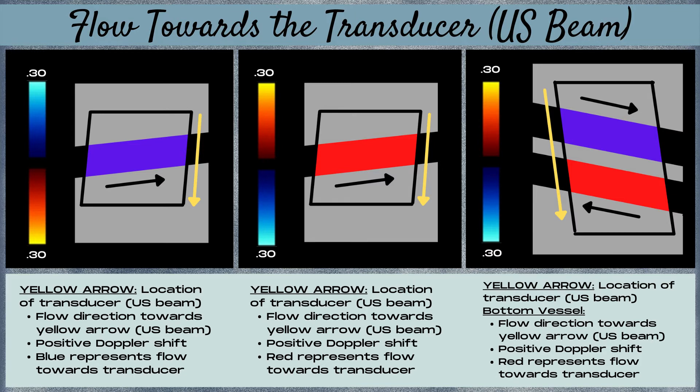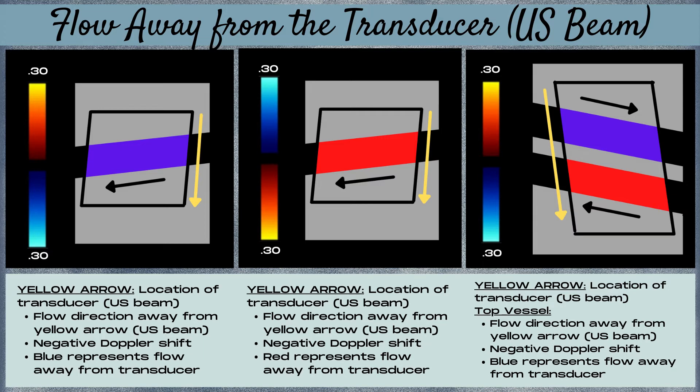These three illustrations represent flow moving away from the transducer or ultrasound beam. In the first image, the color Doppler box and vessel lie match. The vessel color is blue, and blue is at the bottom of the baseline on the color map, meaning negative Doppler shift — flow away from the transducer. The black arrow underneath the vessel represents direction of flow, and the yellow arrow represents the location of the ultrasound beam. The black arrow is moving away from the yellow arrow, confirming flow away from the transducer.